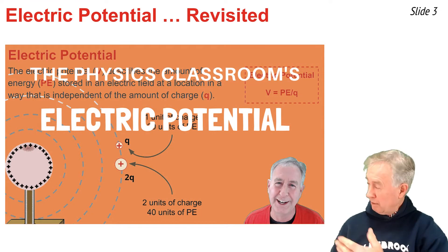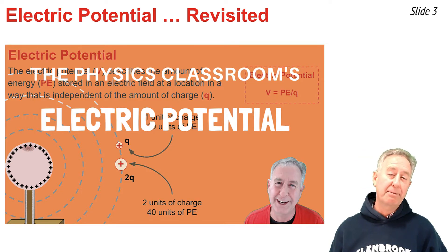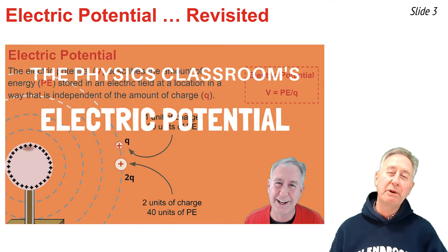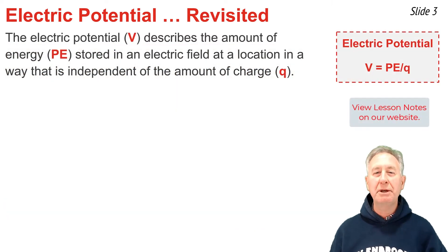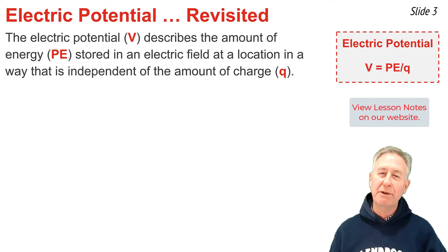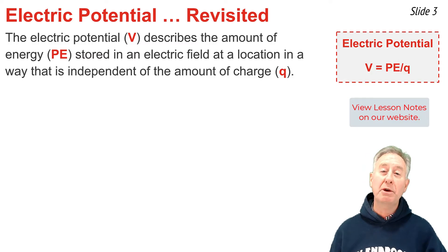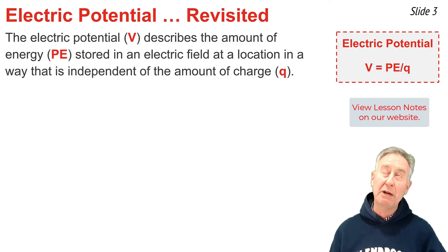In a previous video I discussed the concept of electric potential. I left a link to that video in the description section if you need to review it. Electric potential is a location-dependent quantity that describes the amount of electric potential energy stored in an electric field in a manner that is independent of the quantity of charge. We can calculate the electric potential V by taking the amount of potential energy that an object possesses at a given location and dividing it by the quantity of charge Q. In other words, V equals potential energy divided by Q.